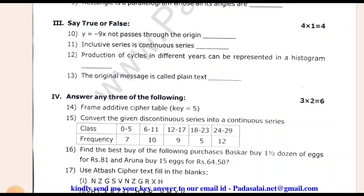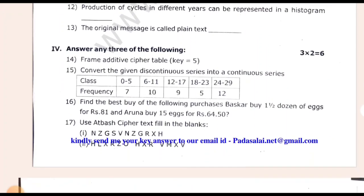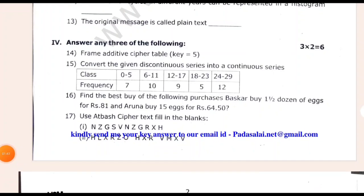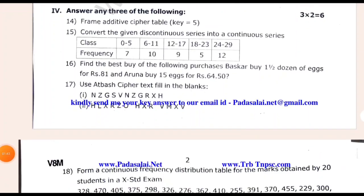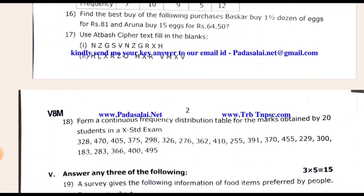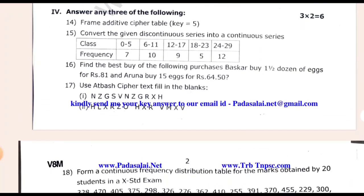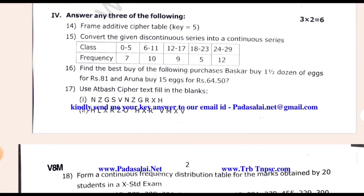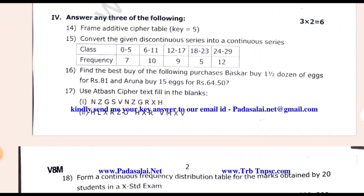Inclusive series is a continuity series. Production of cycling different items can be represented as a histogram. The original message is called plain text. So this is a 2-mark question: flame, additive, cipher table. If you want to get 5 or 3, you will have 2 choices.